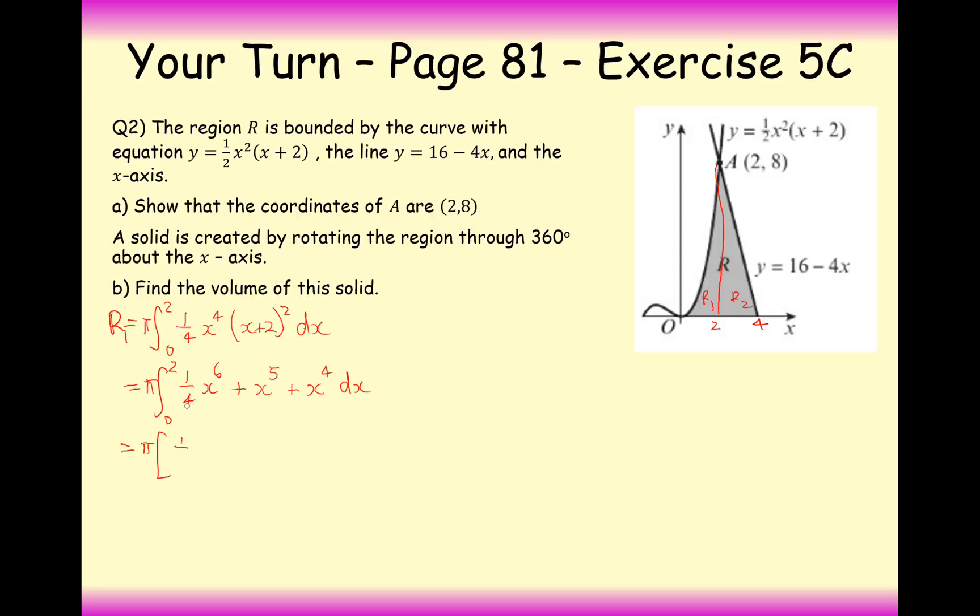So now it's time to integrate. So it's going to be 1 over 28 x to the 7 plus 1 over 6 x to the 6 plus 1 over 5 x to the 5. And this is all going to be in between 2 and 0. So grabbing your calculator and substituting in the value of 2 and subtracting the value of 0 substituted in. And we get 2272 pi over 105. Great. So that's R1.